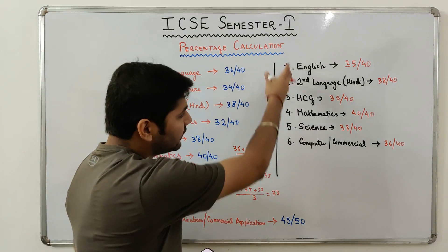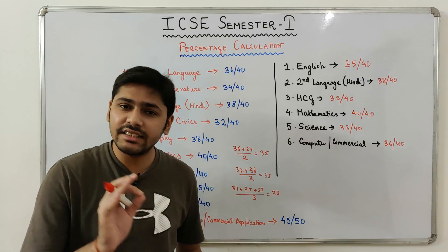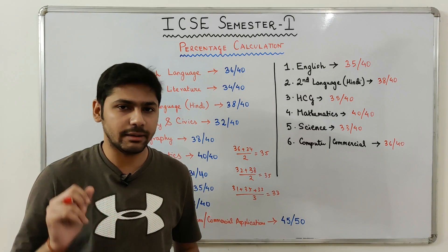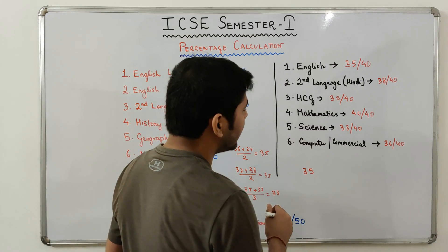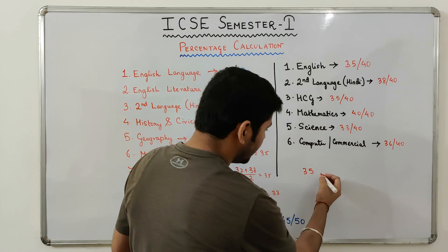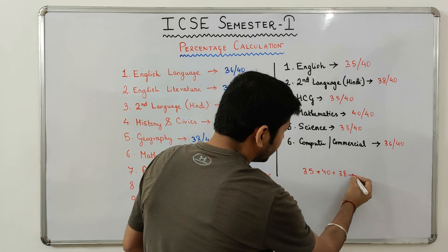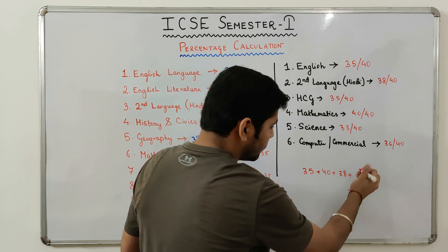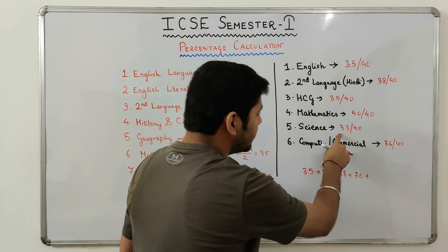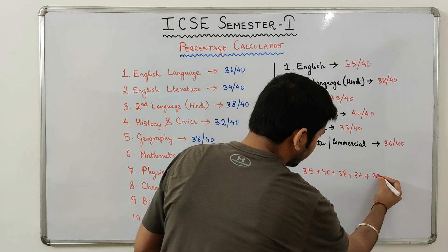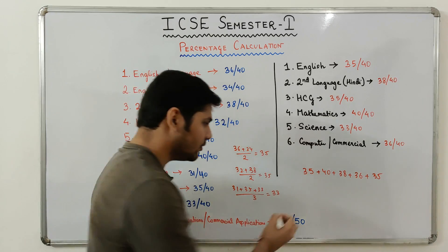Now we have the aggregated marks for all subjects and can easily find the Best of 5 final percentage. In the Best of 5 method, English is taken compulsorily, and then you find the best 4 subjects from the rest. English is 35. The highest remaining mark is Mathematics at 40, then Second Language at 38, then Computer Applications at 36. We are left with HCG at 35 and Science at 33 — we take the best one, which is HCG at 35. So the Best of 5 subjects are: English plus best 4.